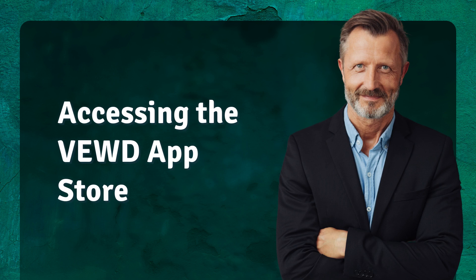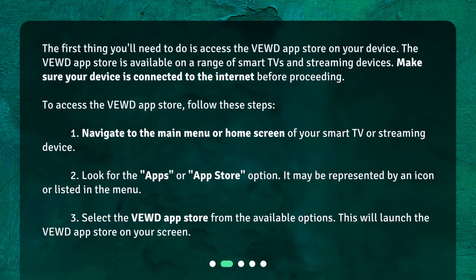The first thing you'll need to do is access the Viewed App Store on your device. The Viewed App Store is available on a range of smart TVs and streaming devices. Make sure your device is connected to the internet before proceeding. Navigate to the main menu or home screen of your smart TV or streaming device. Look for the Apps or App Store option — it may be represented by an icon or listed in the menu. Select the Viewed App Store from the available options; this will launch the Viewed App Store on your screen.